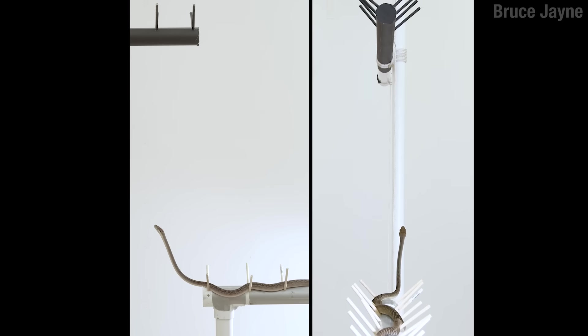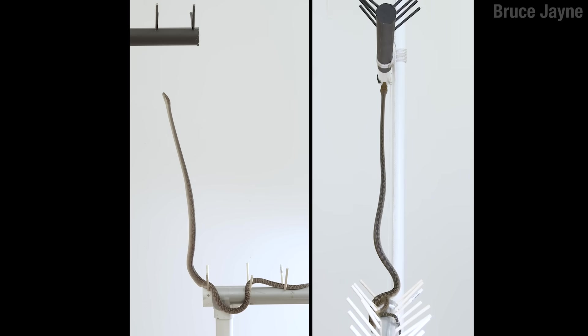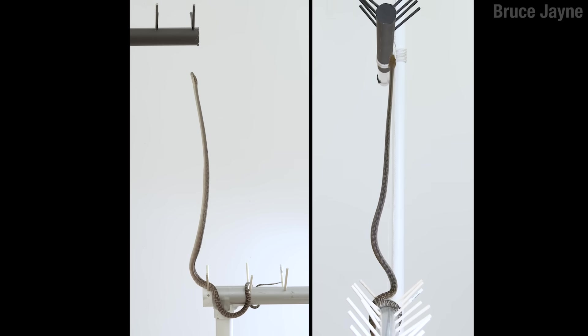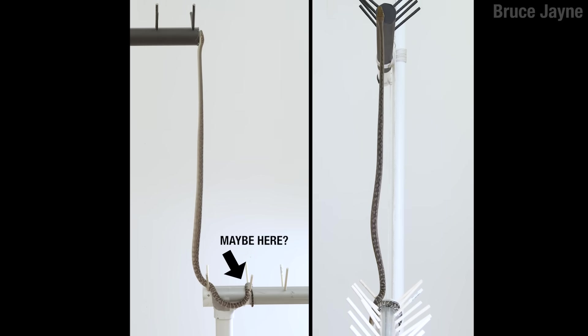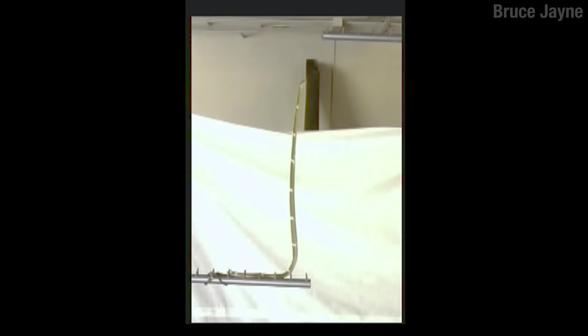But not all your food's gonna be in a little box on top a pole. Sometimes you gotta reach for it. If this scrub python here wants to go straight up, it can bridge a distance that's over 70% of its snout to vent length. Vent in this case meaning butthole, which is pretty far back, as you can see.